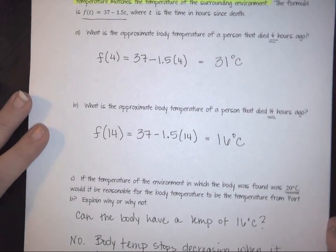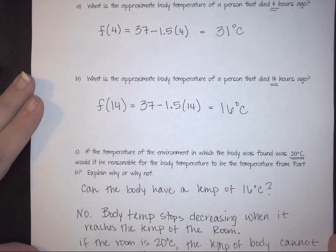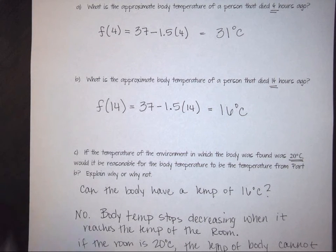So this is just a classic example of something that forensic scientists do all the time. They have to be able to figure out either what the temperature was or from the temperature be able to backtrack and figure out how many hours ago that person died.